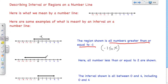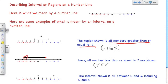The second number line has a point at two with an arrow going left. That's saying there is no value greater than two, but we have all values less than two going to negative infinity. To represent this numerically, we say x is less than or equal to two.